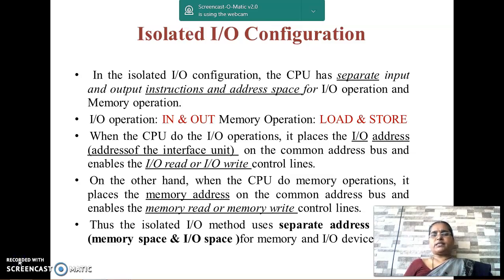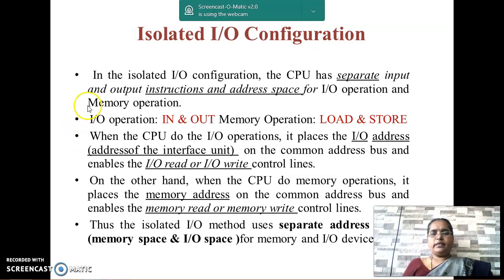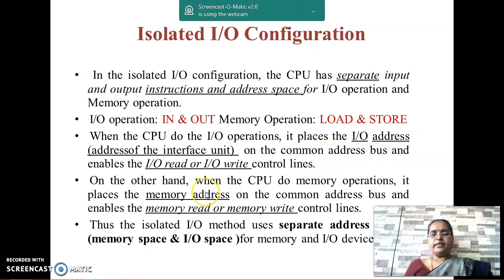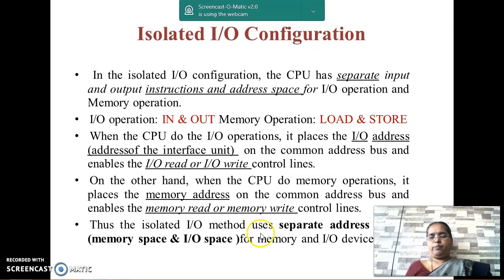Let us discuss the first type, that is, isolated IO configuration. In isolated IO, the CPU has separate instructions and address space for IO operations and memory operations. The instructions used for IO operations are IN and OUT, and the instructions used for memory operations are LOAD and STORE. When the CPU performs an IO operation, it places the IO address on the common bus and enables either the IO read or IO write control signal. When the CPU performs memory operations, it places the memory address on the common bus and enables either the memory read or memory write control signals. Thus, in isolated IO, the CPU uses separate address space for memory and IO devices.